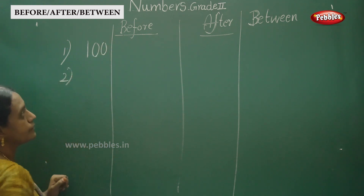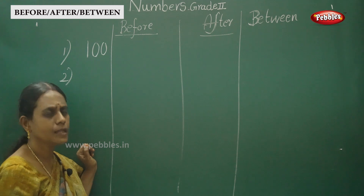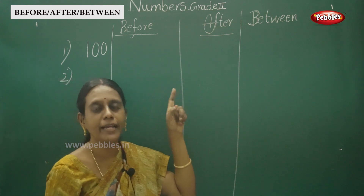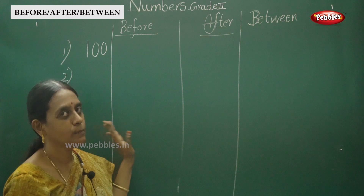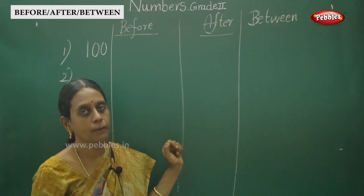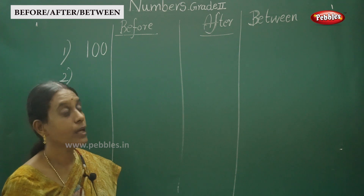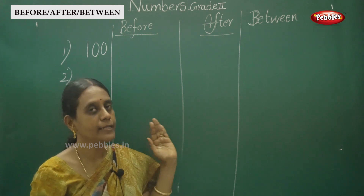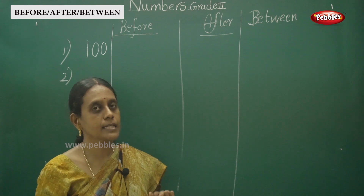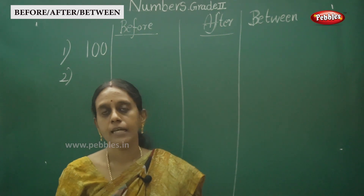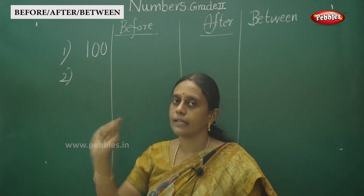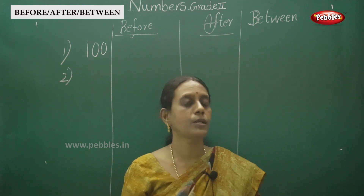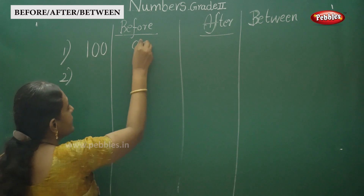Let's think, children. The first number is 100. So you have to count from 91: 91, 92, 93, 94, 95, 96, 97, 98, 99, 100. So what comes before 100? The answer is 99.